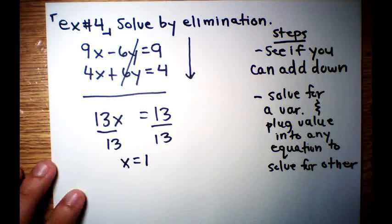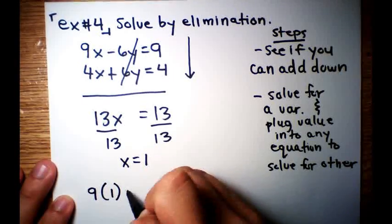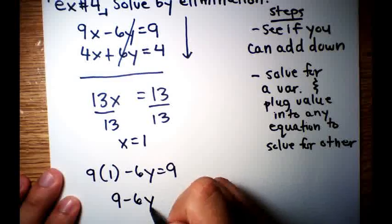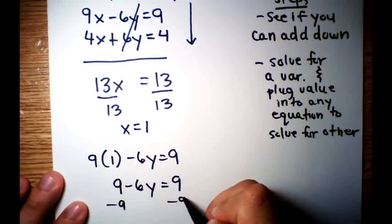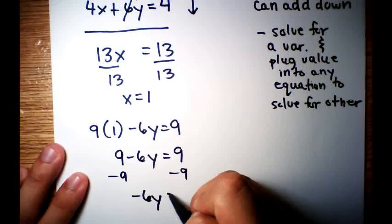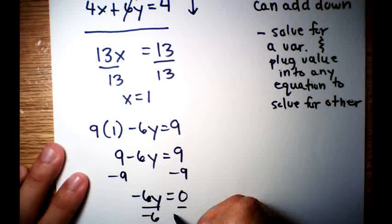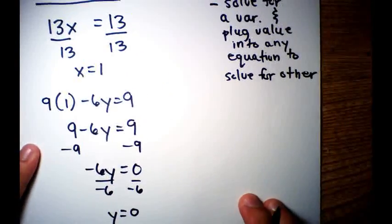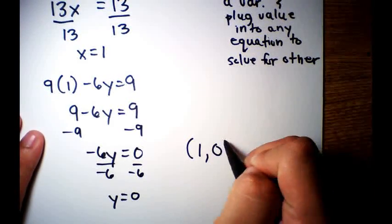From there, just like substitution, you're going to plug in that 1 into any of these equations. So I'm just going to plug it into the first one. 9 times 1 minus 6y is equal to 9. 9 minus 6y is equal to 9. We are going to subtract 9 on both sides. Negative 6y is equal to 0. Divide both sides by negative 6. y is equal to 0. So these two lines are intersecting at a point, 1, 0.